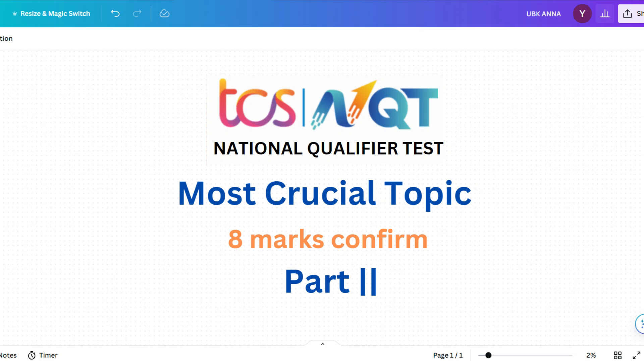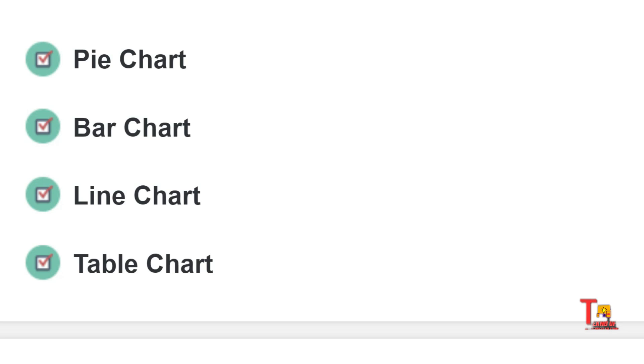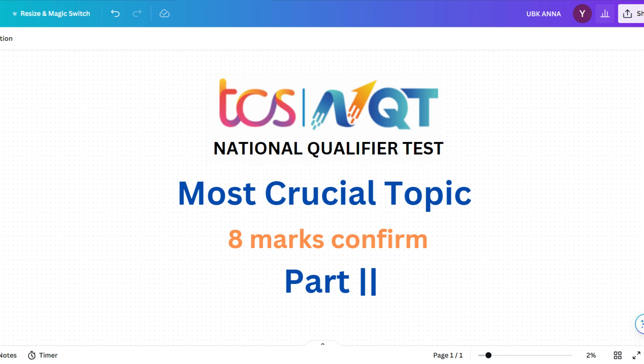Hello, dear family members. Thank you all for your support and enthusiasm. As many of you have requested, I'm uploading a video on advanced sections of TCS NQT. Today we'll discuss some important data interpretation questions. From DI, you will have four types of questions: pie chart, bar chart, line chart, and table chart. You can have four to five questions from these sections, which can matter for your exam. Today we'll focus on table chart.